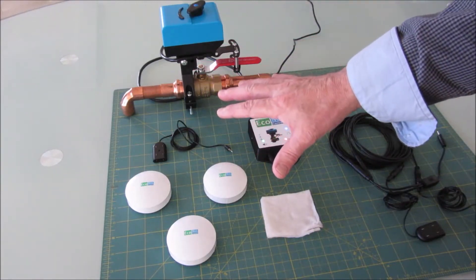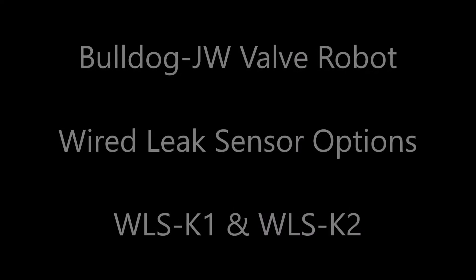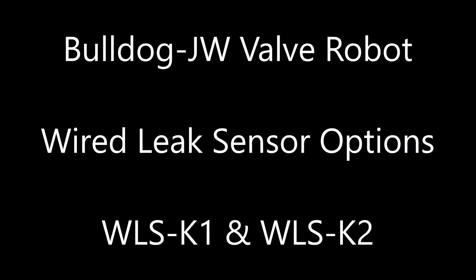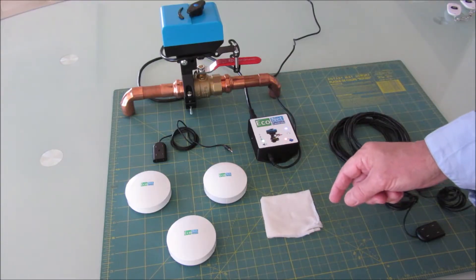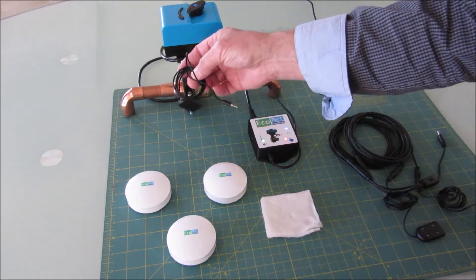This is the Bulldog JW Starter Kit. Today I'm going to show you the wired leak sensor option.